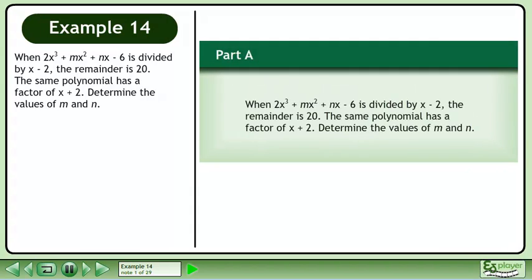When 2x cubed plus mx squared plus nx minus 6 is divided by x minus 2, the remainder is 20. The same polynomial has a factor of x plus 2. Determine the values of m and n.